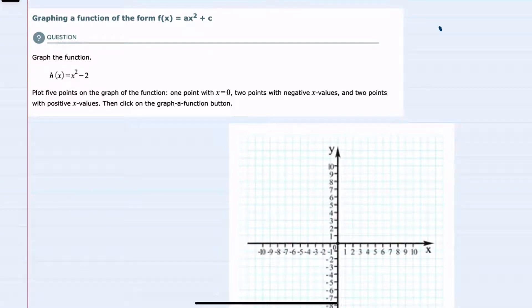In this video I'll be helping you with the Alex problem type called graphing a function of the form f of x equals ax squared plus c. We're asked to graph the function h of x equals x squared minus 2 by plotting five points.